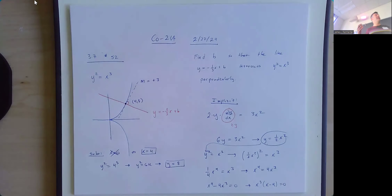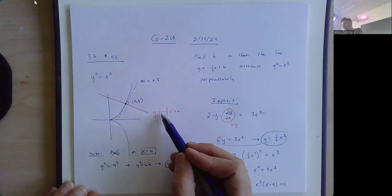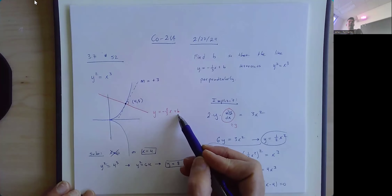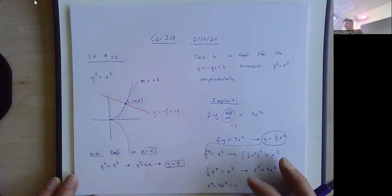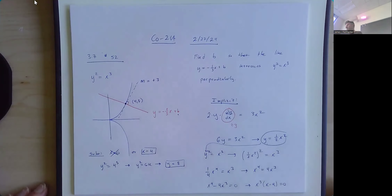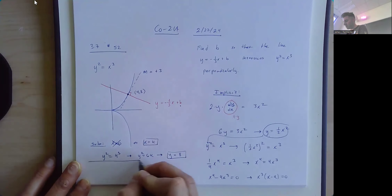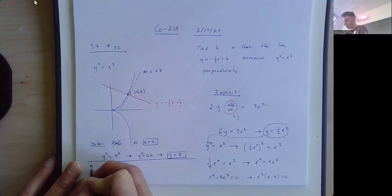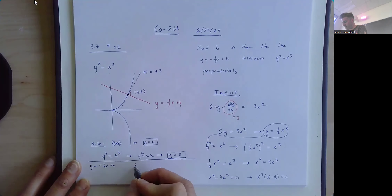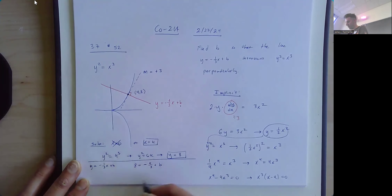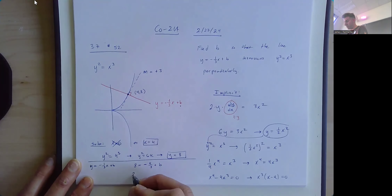We're still not done because we haven't answered the question — what does b have to be? The equation of the line is y equal to negative 1/3 x plus b. Plugging in the point (4, 8): 8 equals negative 4/3 plus b. Adding 4/3 to both sides: b equals 8 plus 4/3 equals 24/3 plus 4/3, which is 28/3.